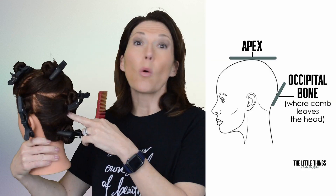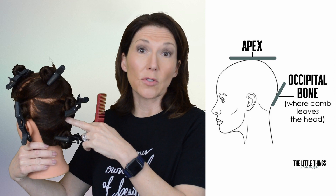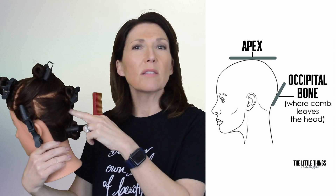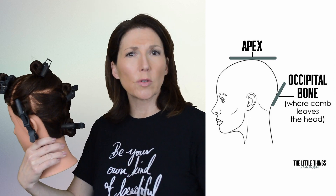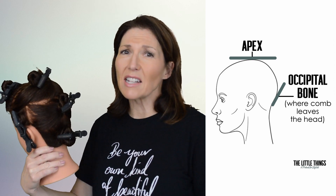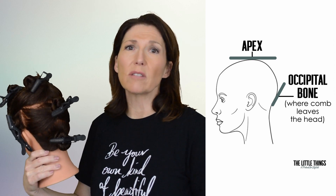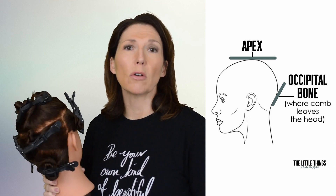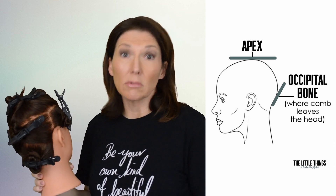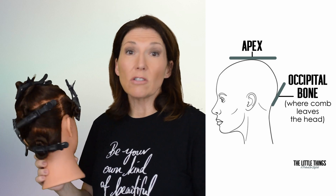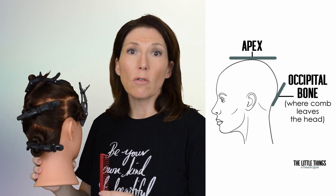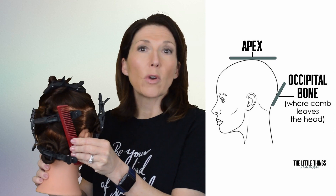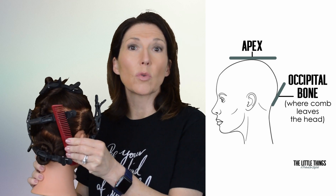The next important reference point is the occipital bone, or the o-bone for short. This is the bone that protrudes at the base of the skull. About 95% of people have an o-bone — some don't. If in doubt, just place your comb on the head like this, and where it comes off is where the o-bone should be.